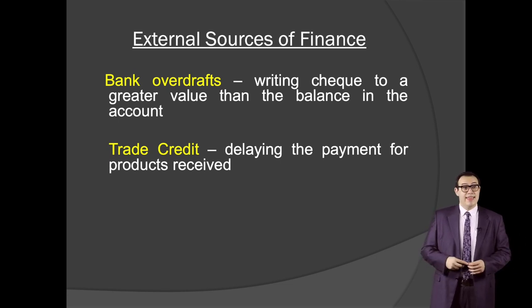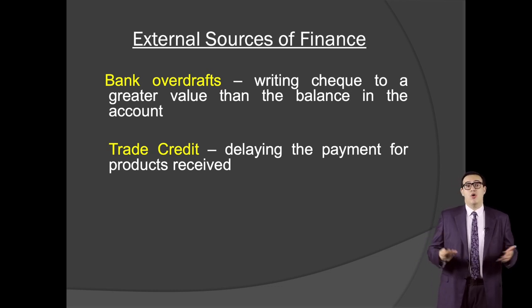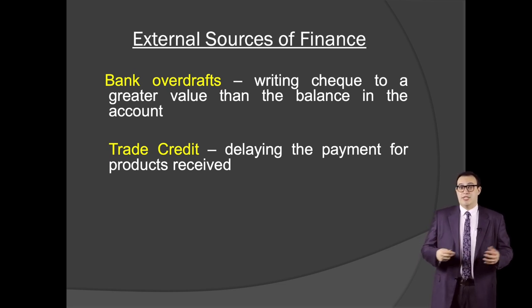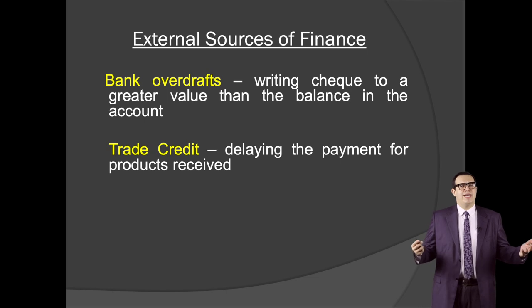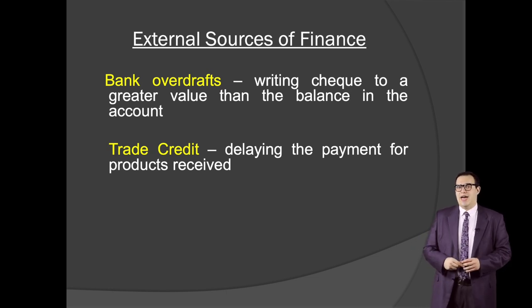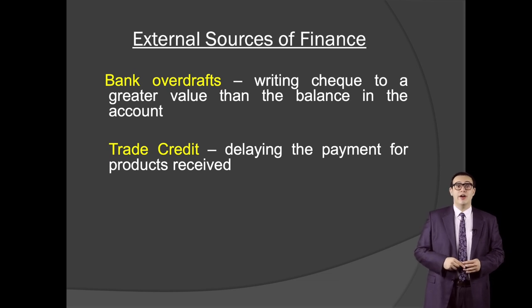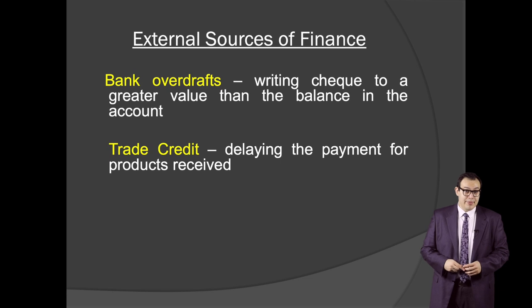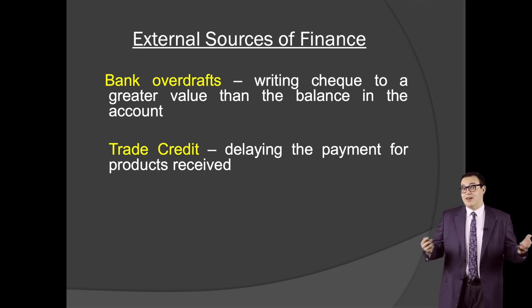Then we have trade credits — delaying the payment for products received. Imagine you are a retailer which trades goods to people. You do not manufacture those goods; they are provided by your suppliers. You assume a trade credit with that supplier, paying only the initial amount of money upfront, and the rest you pay to your supplier after you sell those products, but with an additional markup. So the supplier receives more money, and it also allows you not to invest a lot of money in products upfront.